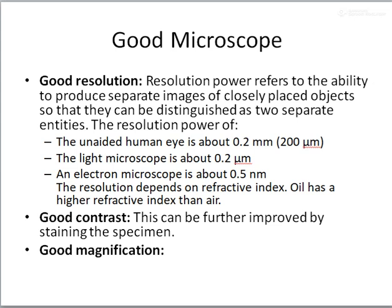But if you go to a light microscope, this distance is about 0.2 micrometer, so that is much closer — you will be able to distinguish points that are found very close together with the help of a light microscope. And in the case of an electron microscope, this distance is about 0.5 nanometer. So the smaller the limit of resolution, the better the microscope becomes.